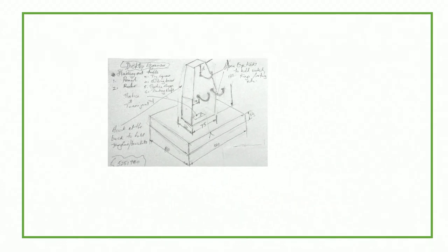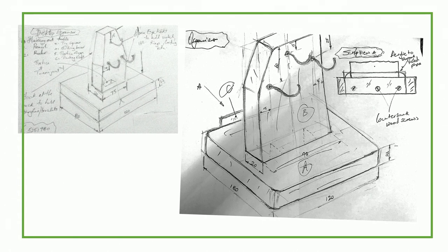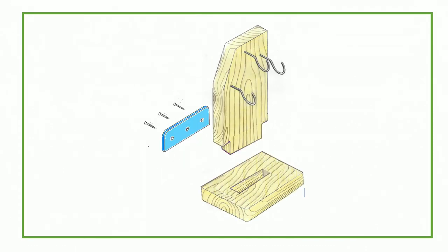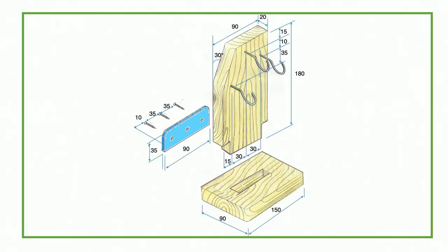These are the concept drawings of an organizer we are going to make in the workshop. It has been designed to hold keys, rings, a watch and also a mobile phone. After thinking further, the idea has been refined to this presentation drawing. You have here an exploded view of our object, and for clarity of explanation we have added the required dimensions. Part A is the wooden base. Part B is the vertical support and is also made of wood. Part C is made of acrylic. The wooden pieces will be joined by means of a simple wood joint and the acrylic will be assembled to the hole by screws.